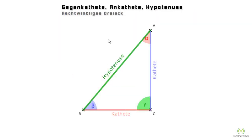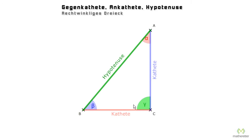Here we see a right triangle: here is the right angle, here alpha, here beta, and we have the three sides. Above it we have the terms: opposite, adjacent, hypotenuse. These are important terms that we definitely need to master. The most important is the hypotenuse — that's the simplest, because it's always the longest side of the right triangle, and the longest side is always opposite the right angle. So if someone asks you about the hypotenuse, you look for where the right angle is, find the side opposite it, and that's the hypotenuse.